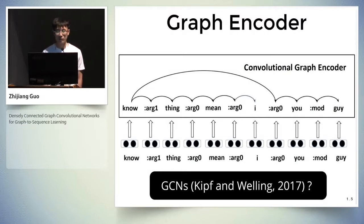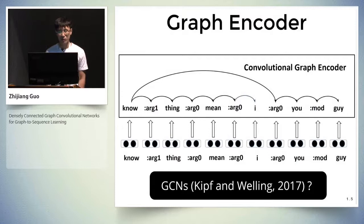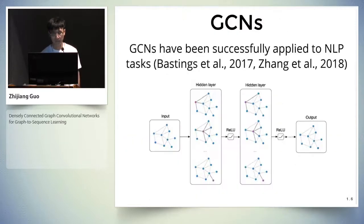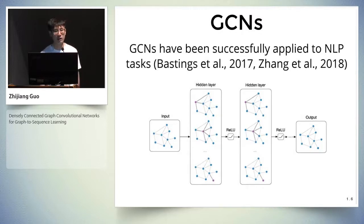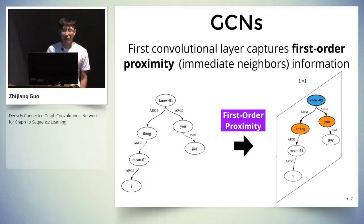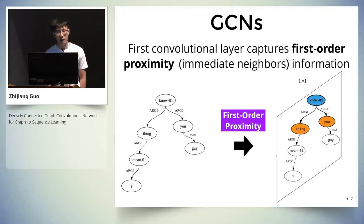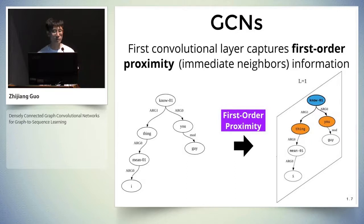This leads to a natural question: is it possible to apply convolutional graph encoders for graph-to-sequence learning tasks? One typical approach is the graph convolutional network proposed by Kipf and Welling. The GCN model has been successfully applied to many NLP tasks, including syntax-based machine translation and relation extraction. The GCN model is able to operate directly on graph structures, where the representation of each node is updated based on its adjacent neighbors through an information propagation scheme. The first graph convolutional layer is able to capture the first-order proximity information.